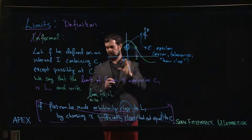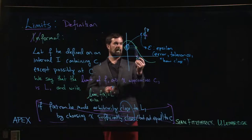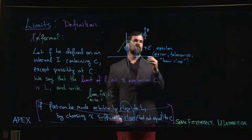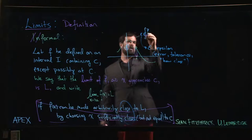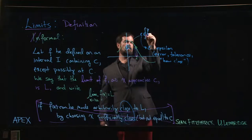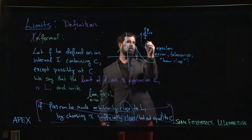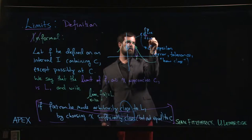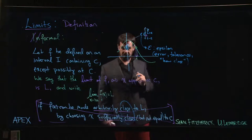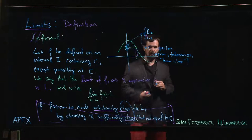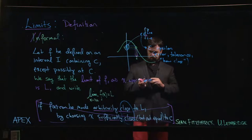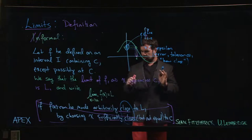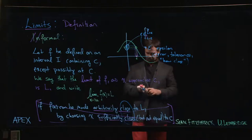Epsilon is saying how close we want f(x) to be from L. That means we have a range of values between L plus epsilon and L minus epsilon. That's the arbitrary part of this.